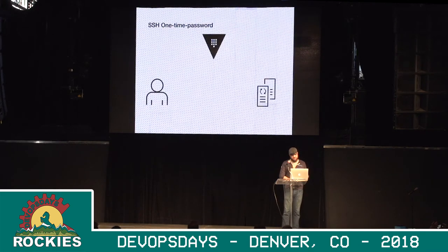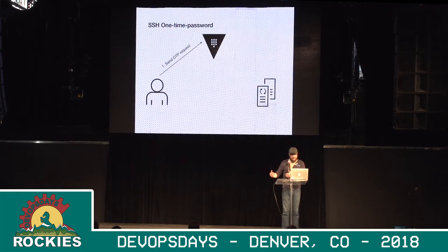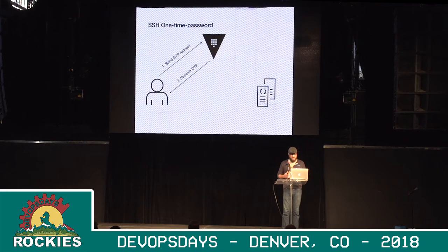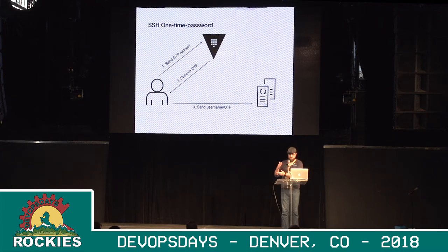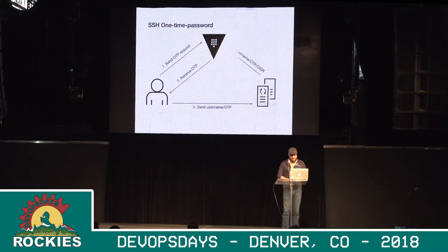So SSH one-time password — as a user, I can make a request to Vault and say I've got a request for a one-time password. Vault will say, you're authenticated, here's your password. It sends back that one-time password, and the user can use it one time. I send that username and one-time password request to my client. My client is actually set up using a PAM module — a pluggable authentication module — called a Vault SSH helper. It brokers that connection and says, hey Vault, can this person access this instance with this IP address, this username, and this password? And Vault says yes, you're good, and sends the SSH connection all the way through.